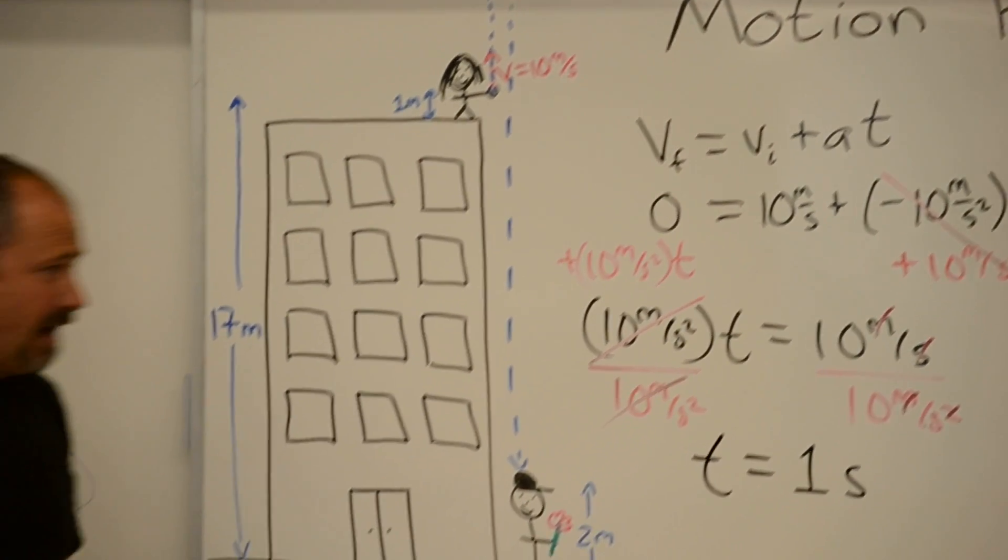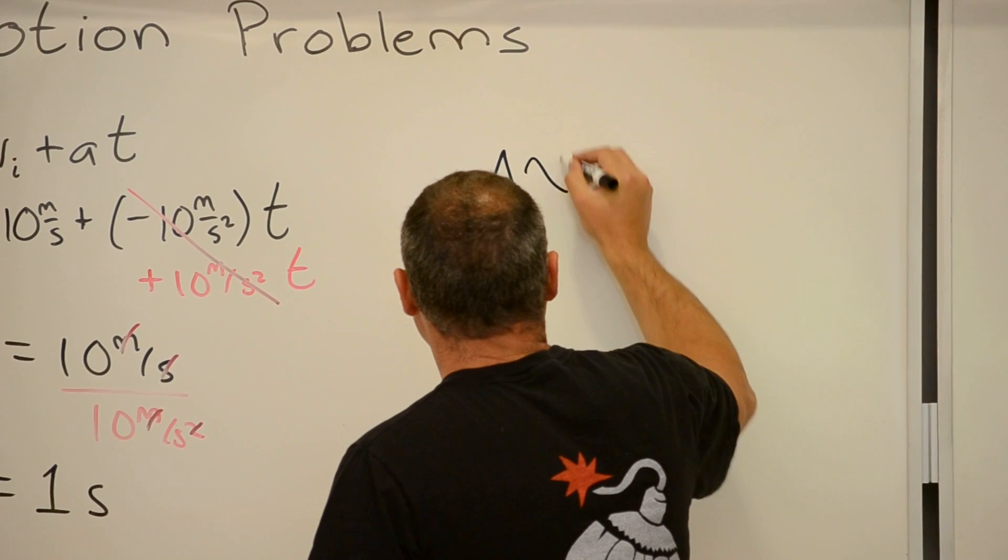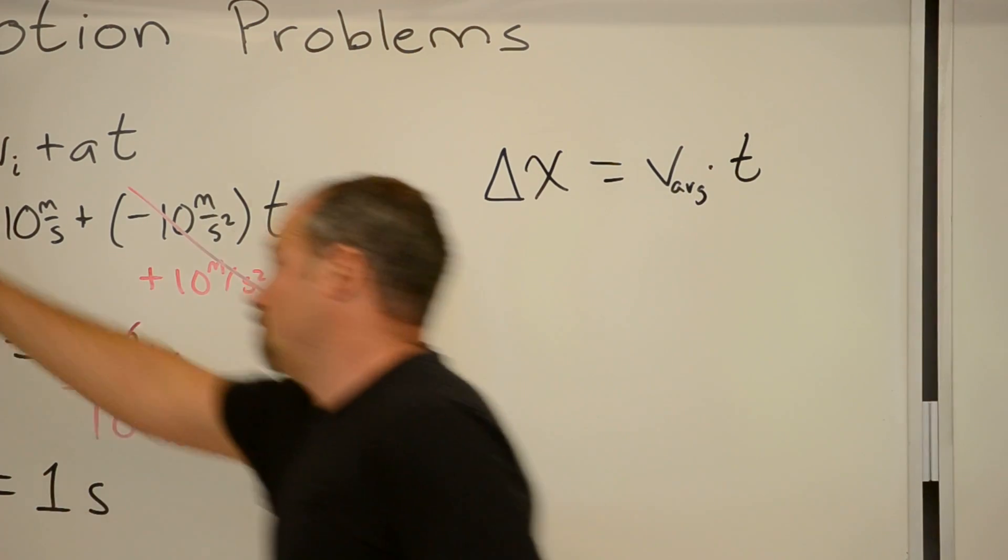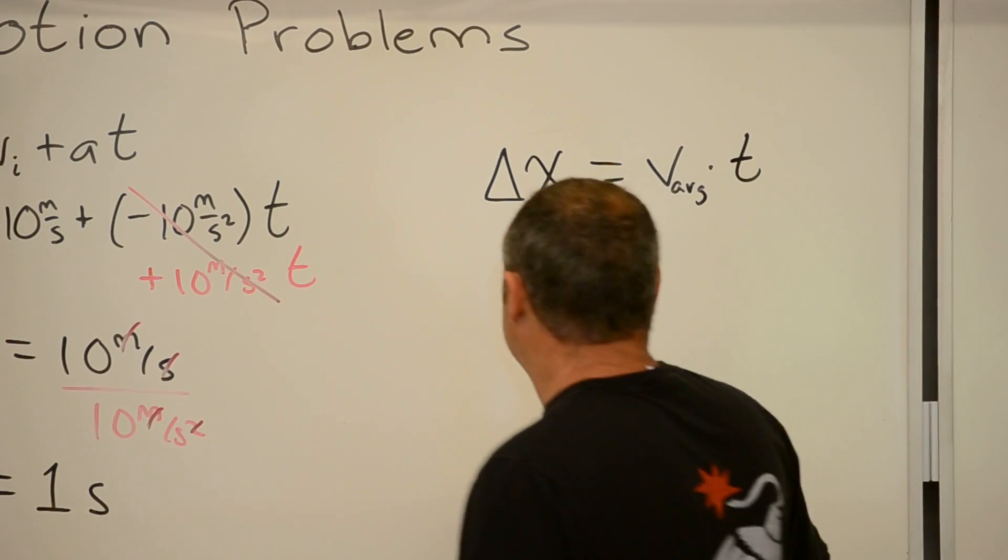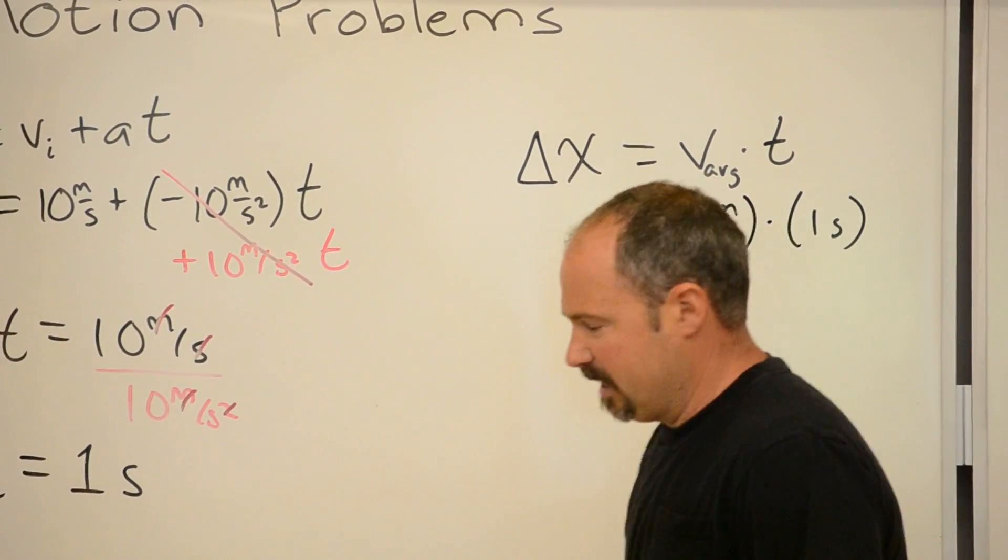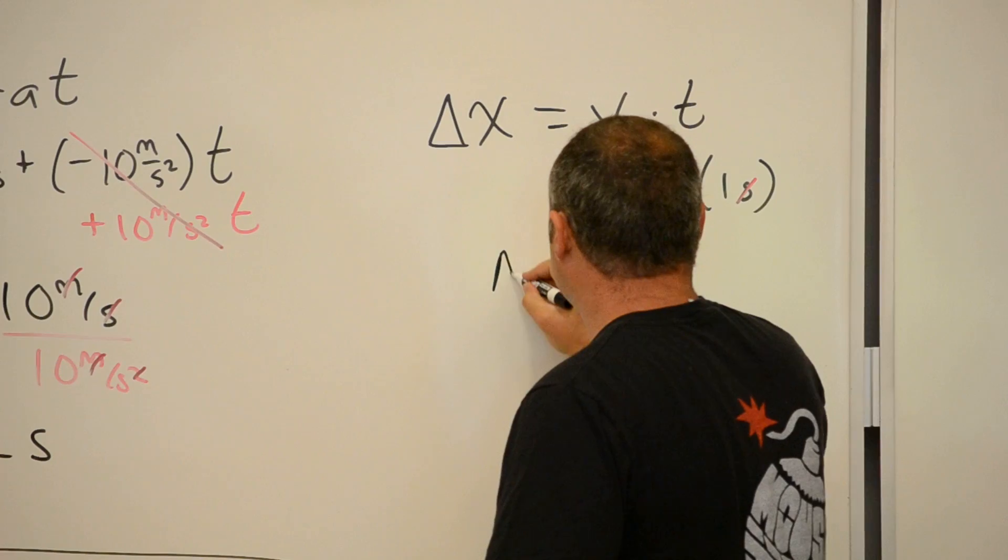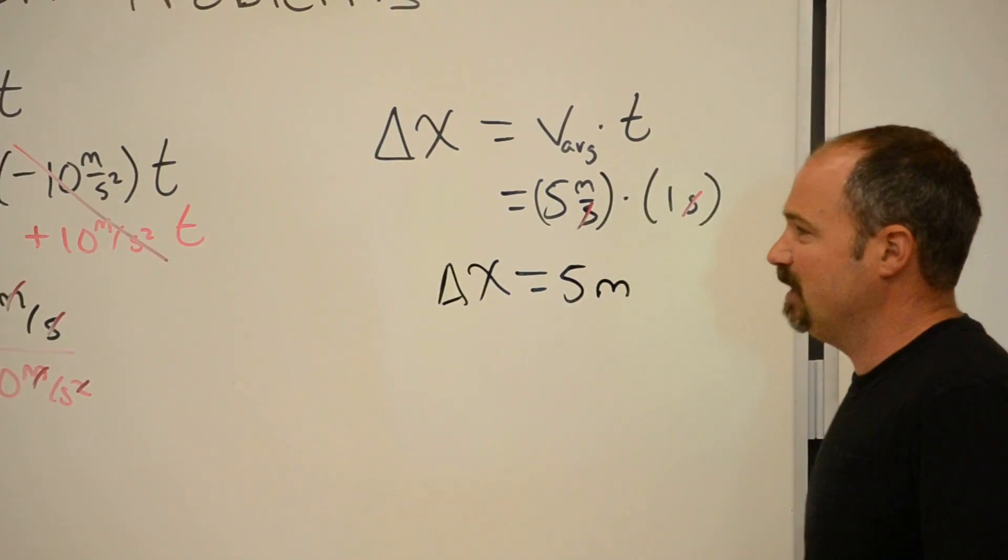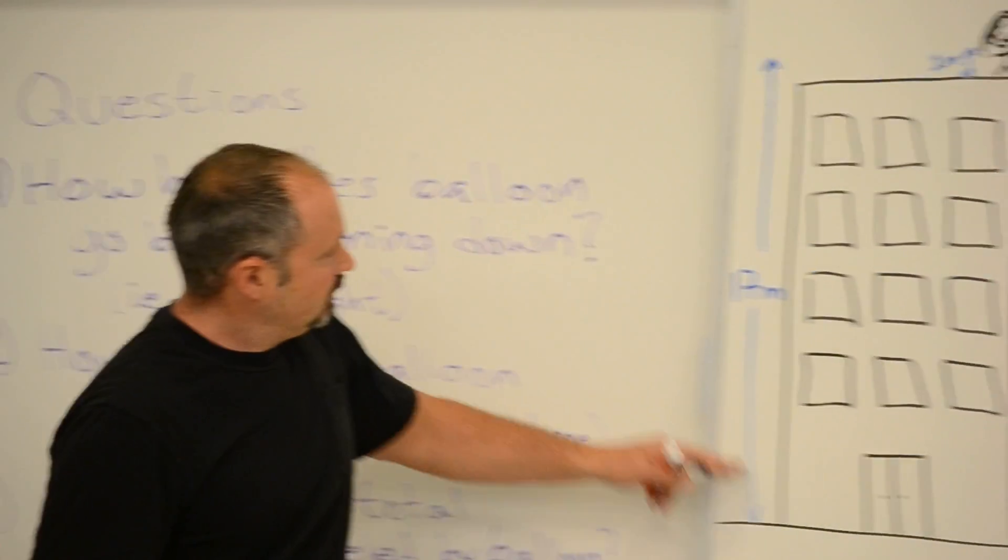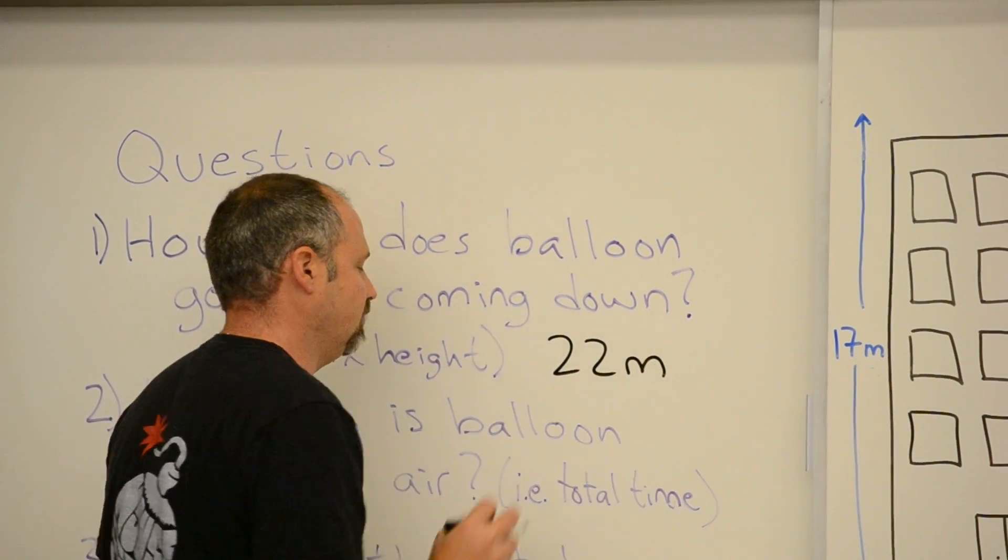Well, how far did it go in that one second? Well, we can use that the displacement is equal to the average velocity times time. What's the average velocity? Starts at 10, ends at zero. The average is five. So five meters per second times one second. And we can see that the seconds cancel. And therefore, I'm left with five meters. So the balloon increased in height by five meters. So how high does the balloon go before coming down? Well, what's its max height? Relative to the ground, you start at 17, you go up another five meters. The answer would be 22 meters. Excellent.